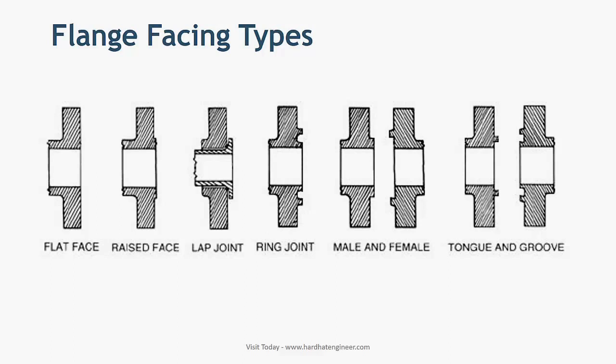For 150 and 300 class flanges, the height of the raised face is 1/6 inch, and above 300 class it is 1/4 inch. The inside bore circle type of gasket is used with the raised face flange.